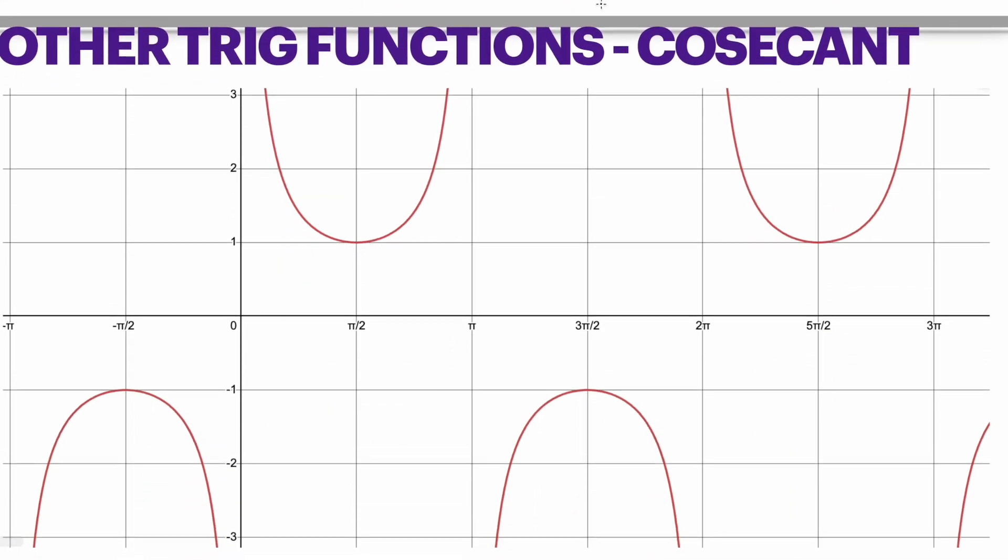Cosecant is the reciprocal of sine. So if you were to graph the parent function of sine, then every time it reaches its highest and lowest points, the cosecant function will create parabolas from there.